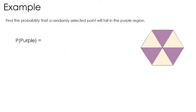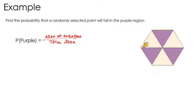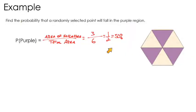Let's look at this easy example to help us understand the concept. Find the probability that a randomly selected point will fall in the purple region. We want the area of successes out of total area. While we don't know the area of every single triangle or the entire hexagon, we can look at this as ratios. There are six parts, and our successes are three of those parts, so that's the same as one half or 50%.